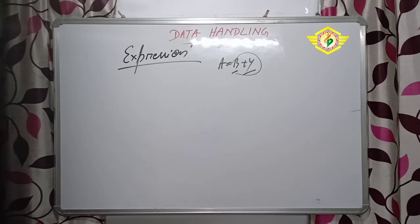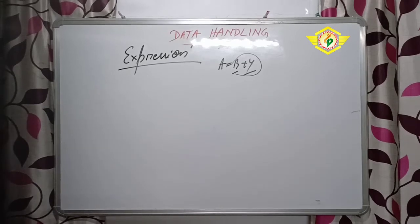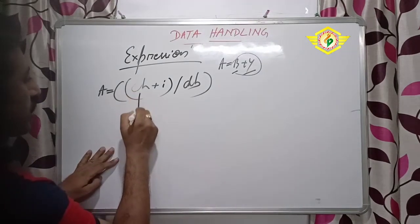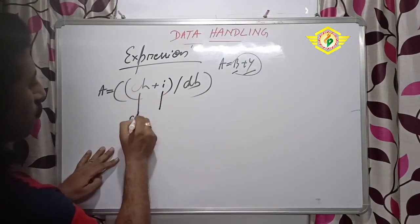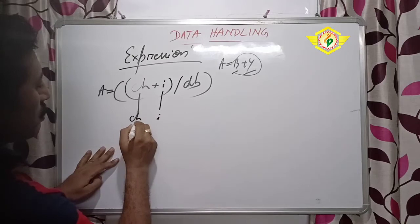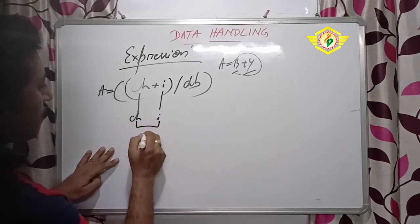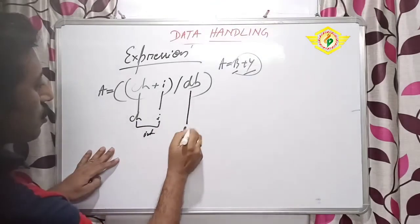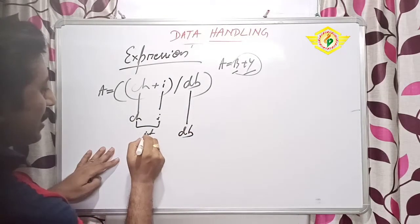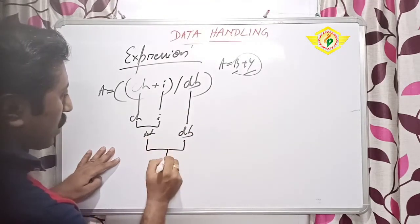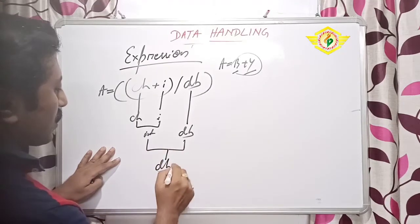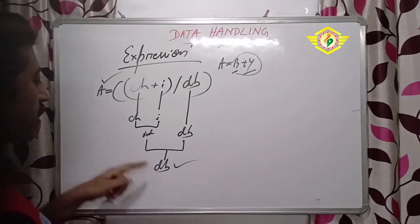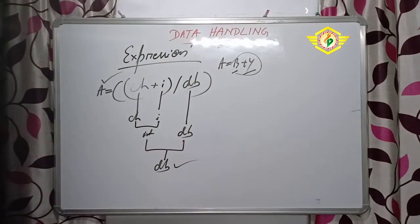In arithmetic operators, just I am showing you one example. This is a character type. This is an integer type. When character and integer both will be added, then integer value will come. In the similar way, here it is double means floating type number. So when integer and float both will come, the output will come in double form - that means floating value. The type of A will be the double or floating type of value.